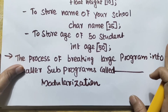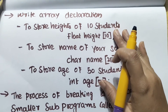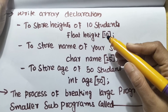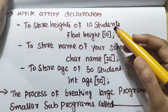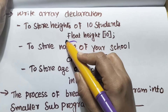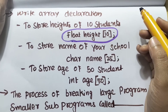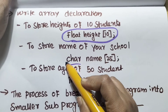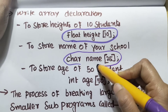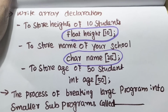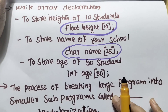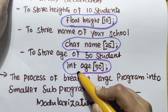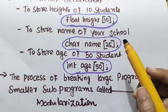Write the array declaration for the following: To store the height of 10 students, declare float height[10]; To store the name of your school, use char name[25]; To store the age of 50 students, use int age[50];